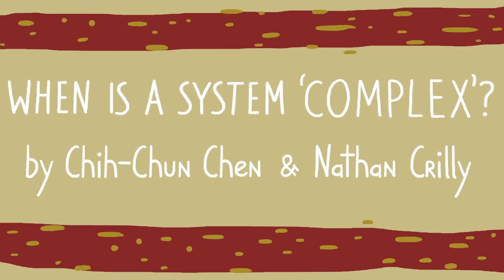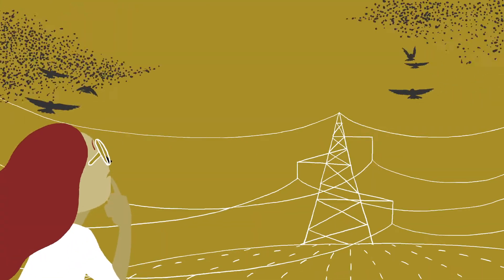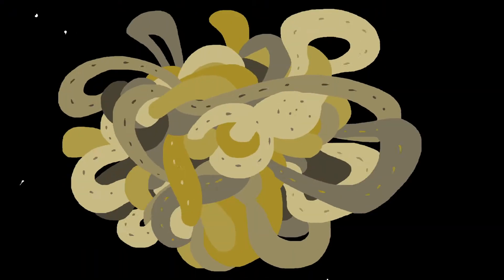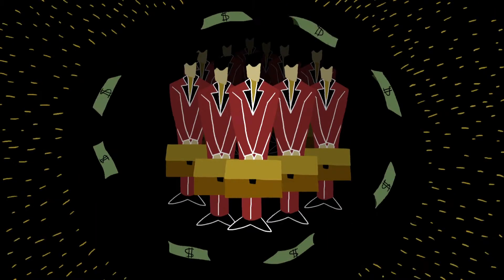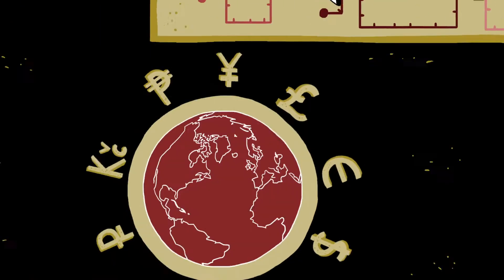When is a system complex? When we talk about things we don't fully understand or can't predict, we often refer to those things as being complex. Commercial organisations, biological cells, transportation systems, global economies.